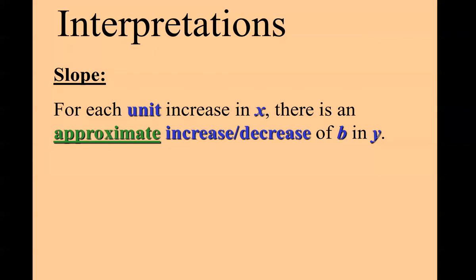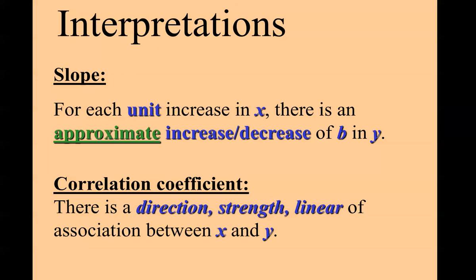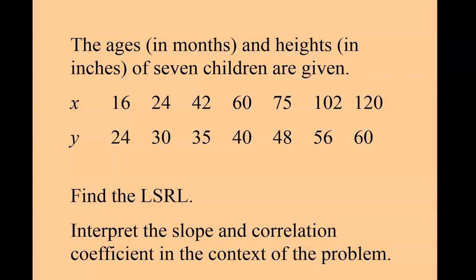A lot of times in stats they're going to ask you, what do you interpret this to mean, what do you think this means. It's going to sound like they're asking your feelings questions. They're not. No one cares what you think. We want to know what is the phrase associated with, in this case, slope. For each unit increase in X, there's an approximate increase or decrease of b in Y. When I walk around and look at everyone's homework paper, test papers, it should look like everyone's copying the same sentence, because you are. You're writing down this phrase. You're going to fill in the blue stuff with actual verbiage from the problem. Correlation coefficient, same thing: there is a direction, strength, linear association between X and Y.